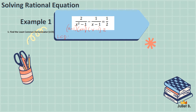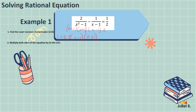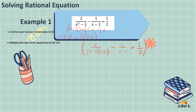The factors of x squared minus 1 are x minus 1 times x plus 1. Since x minus 1 is not factorable, we copy it, followed by 2. For the LCD, we get all factors present in the denominators: x minus 1, x plus 1, and 2. So the LCD is 2 times x minus 1 times x plus 1.